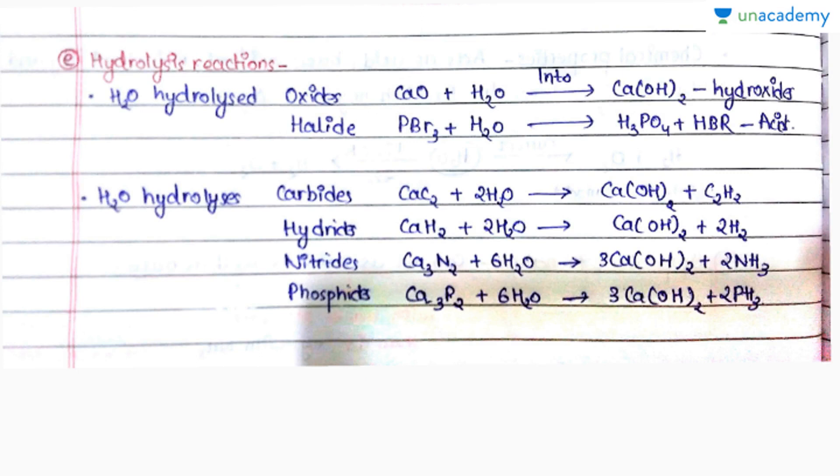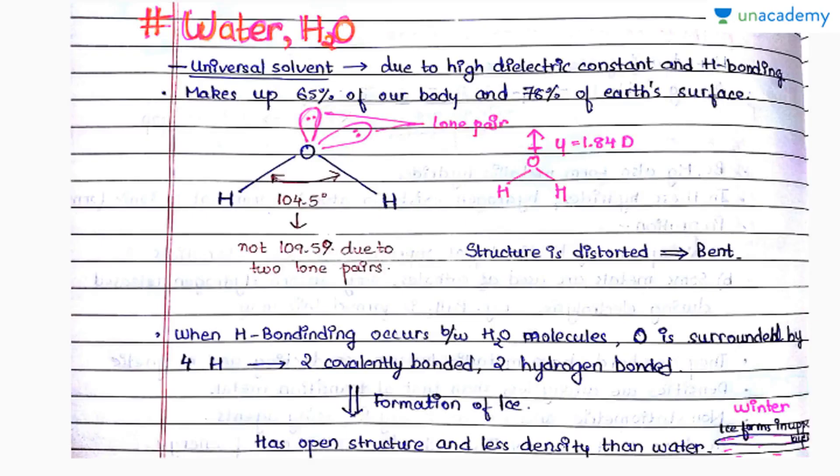These are the hydrolysis reactions. Water will hydrolyze oxides into hydroxides, halides into their acids, carbides into hydroxides giving by-products. You have to remember by-products: in case of carbide we will get C2H2, in case of hydride we will get H2, in case of nitride we will get NH3, in case of phosphides we will get phosphine. So here we complete with the properties of dihydrogen and that of water.